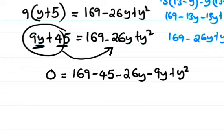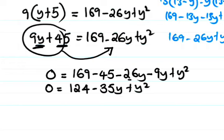We'll have 169, 169 minus 45 is 124. 124 minus 26y, minus 26 minus 9, minus 35y, so negative 35y, plus y squared.